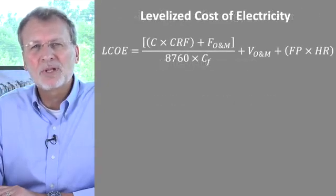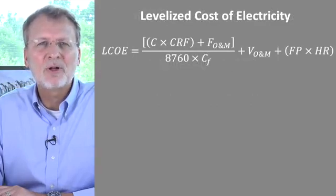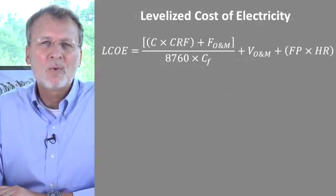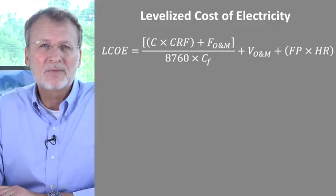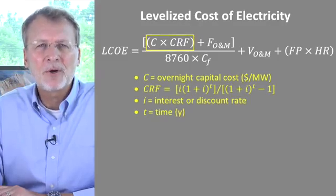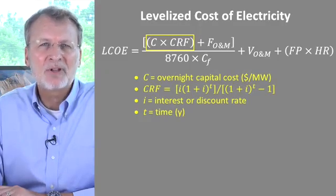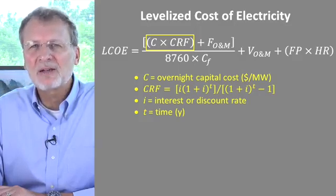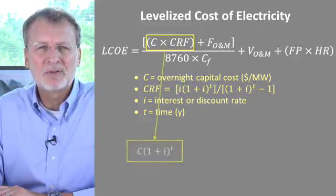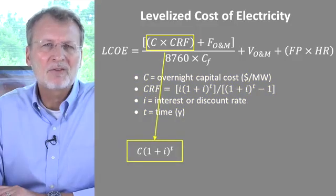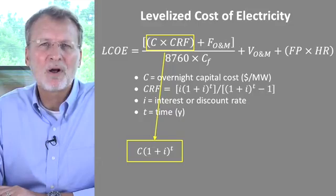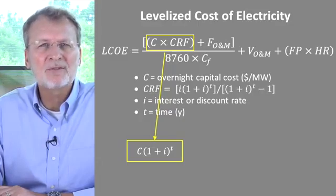The LCOE for a plant is calculated using the following equation. While the equation may look a little confusing, it's best understood if broken down into its component parts. The first component is the capital cost of the plant amortized over the lifetime of the plant. This component is in fact made up of two sub-components. The first sub-component expresses the purchase price of the plant in terms of what the plant would cost if bought new a plant lifetime from now.